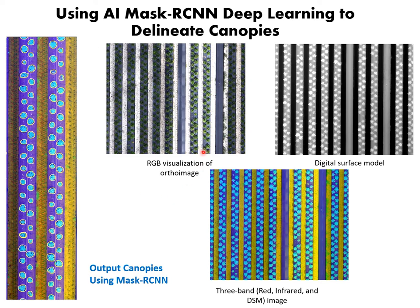These are the results using artificial intelligence to delineate the canopies. We can see all the canopies are delineated automatically — we used the software and trained the models in order to produce this information.